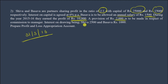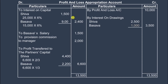We need to prepare the Profit and Loss Appropriation Account for the year ending 31st March 2016. Starting from the credit side, we credit the Profit and Loss Account — this is the profit transferred from the trading account.